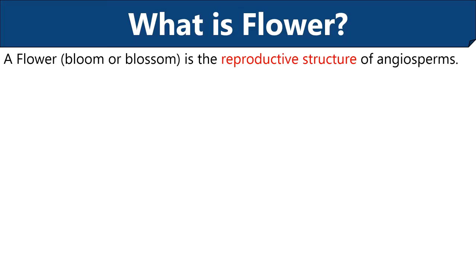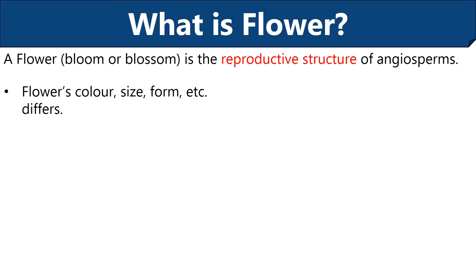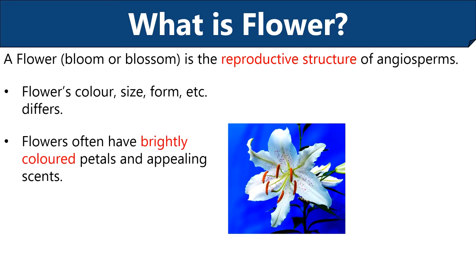Let us start this video by discussing what is a flower. A flower is also called bloom or blossom and considered the reproductive organ of the flowering plants or angiosperms. Flowers come in many different shapes, sizes, colors and scents. The majority of flowers have vivid colored petals and scents, and their job is to attract pollinators like bees, butterflies etc.